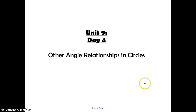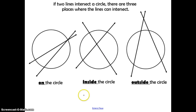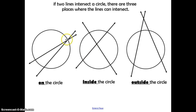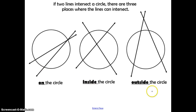Unit 9, Day 4: Other Angle Relationships in Circles. If two lines intersect in a circle, there are three places where the lines can intersect: on the circle, inside the circle, and outside the circle. Last time we talked about what happens when two lines intersect on the circle — the inscribed angle is half of the intercepted arc measure. Today we are going to talk about what happens when they intersect inside the circle and outside the circle.